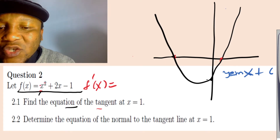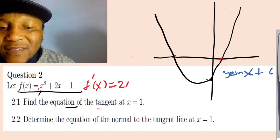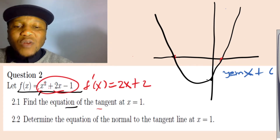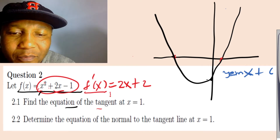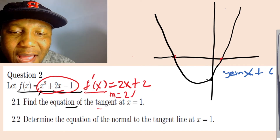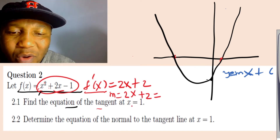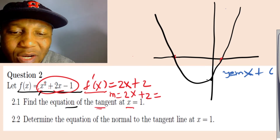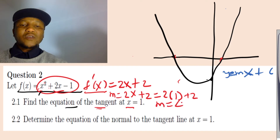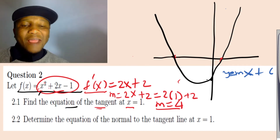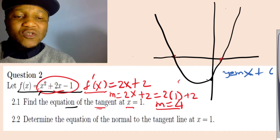When we differentiate x squared plus 2x minus 1, we get f prime of x equal to 2x plus 2. That is the slope. At x equal to 1, the slope is 2 times 1 plus 2 which equals 4. You can call it gradient or slope — it's the same thing.